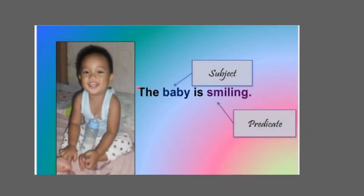Here is an example of a sentence: 'The baby is smiling.' The baby is the subject. Is smiling is the predicate — from the verb 'is' to the remaining part of the sentence. A sentence is a group of words that contains a subject and a predicate and expresses a complete thought.